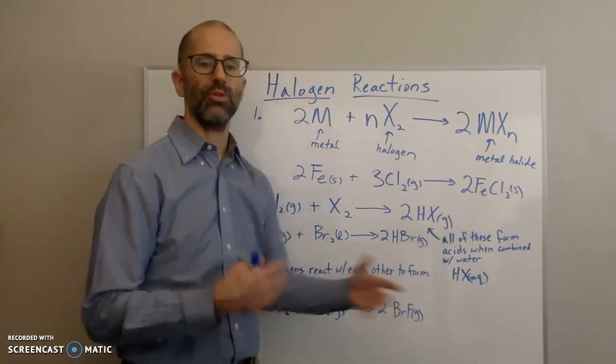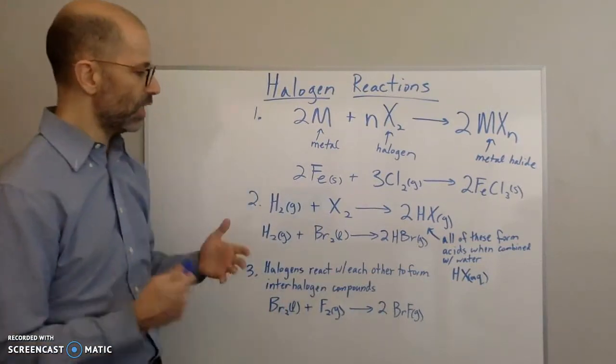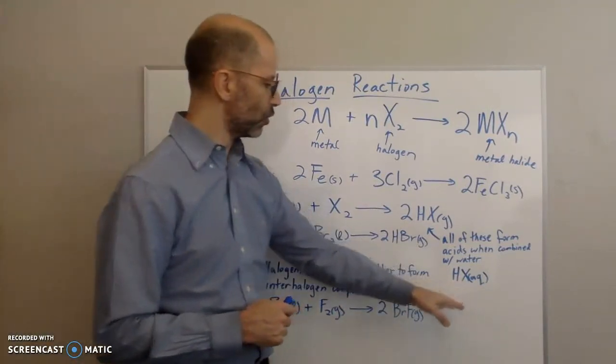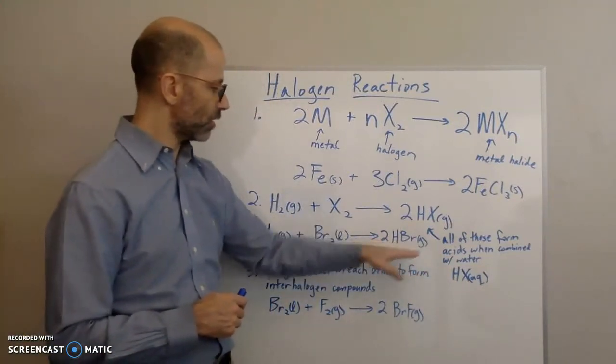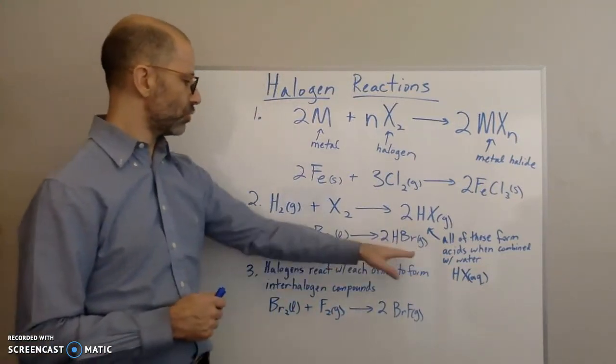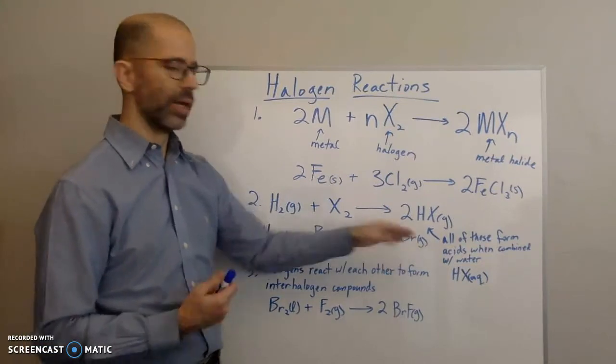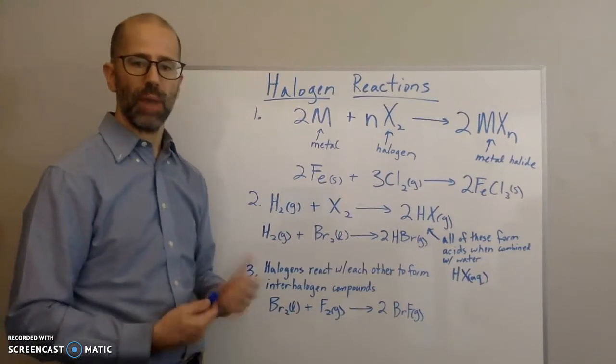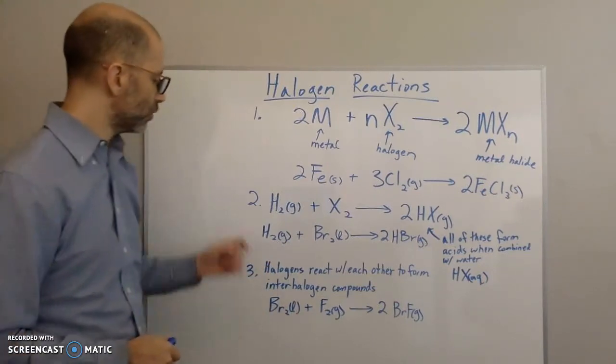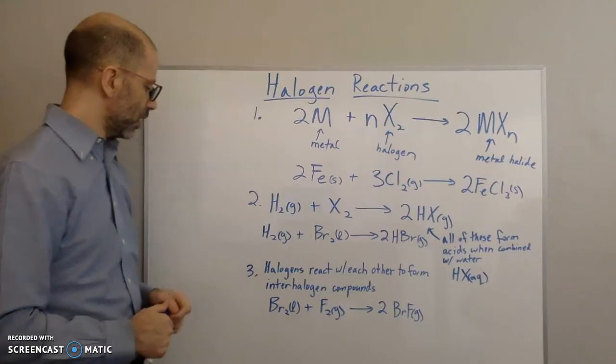If it reacts with water, it will form an acid solution—an aqueous solution. There it would be an acid, and you'd have to name it like an acid. This would be a binary acid, so if it was aqueous, you would name this hydrobromic acid instead of hydrogen bromide or hydrogen monobromide.